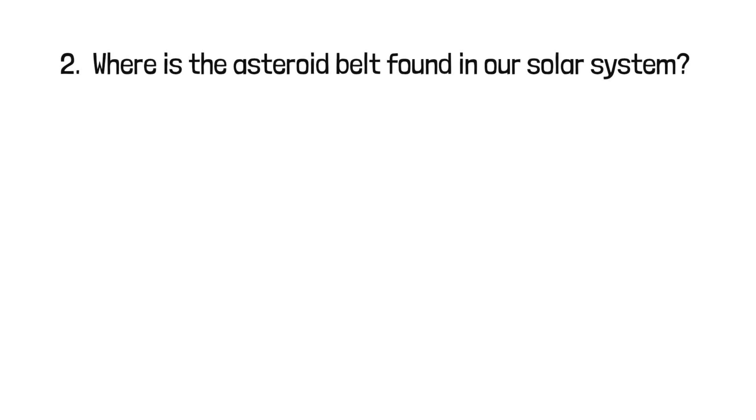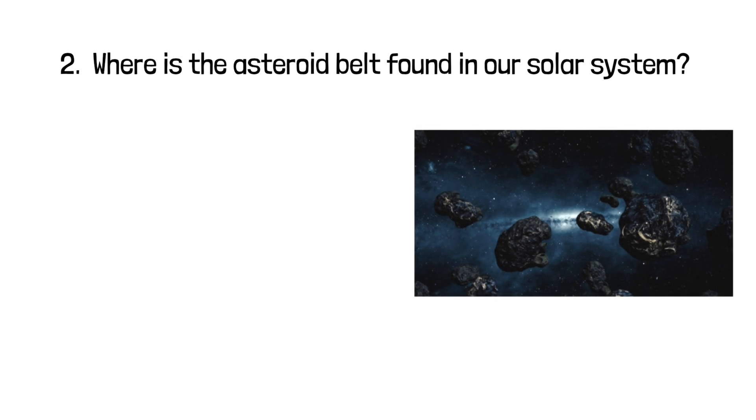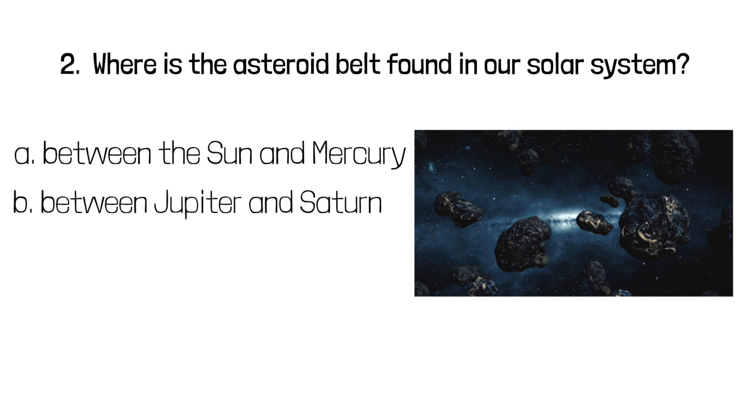Question 2: Where is the asteroid belt found in our solar system? Is it A between the Sun and Mercury, B between Jupiter and Saturn, C between Mars and Jupiter? The correct answer is C between Mars and Jupiter.